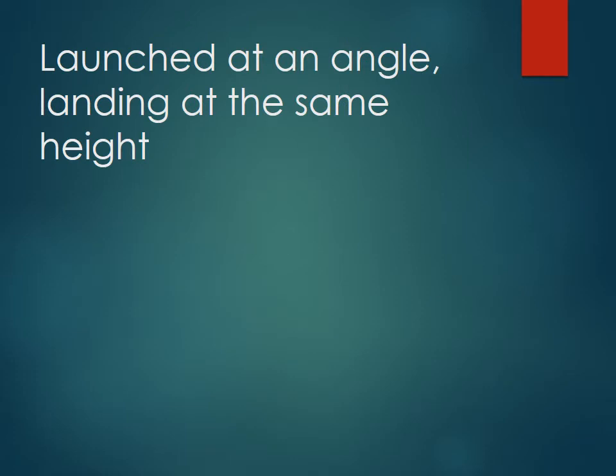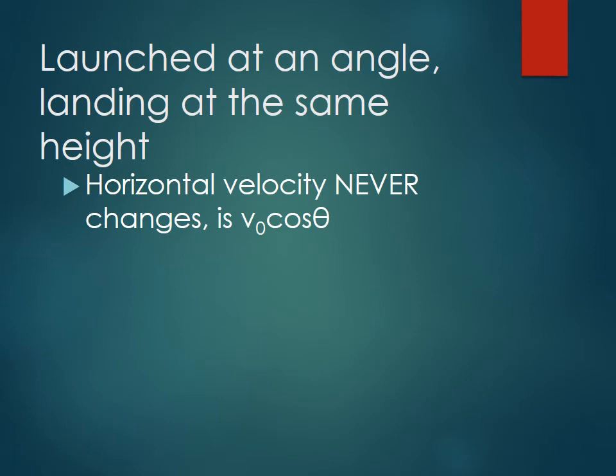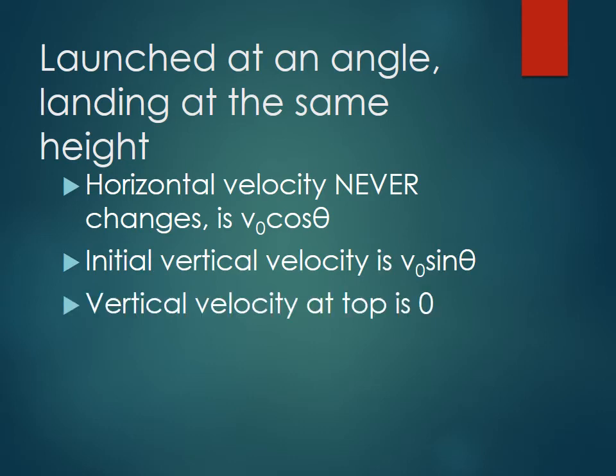The next scenario is launched at an angle, landing at the same height. Now that angle means it's the angle above the horizontal, so just like when we did vectors, it's the angle from the positive x direction. So again, the horizontal velocity never changes, but now it's your x component of your initial velocity. So it's v0 times cosine of theta, where theta is that angle from the horizontal. The initial vertical velocity is v0 sine theta. The vertical velocity at the top of its path is zero.